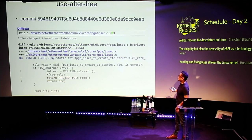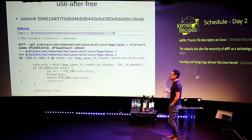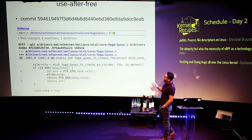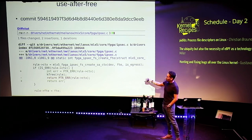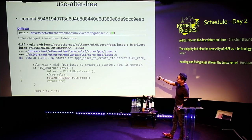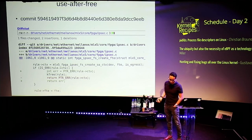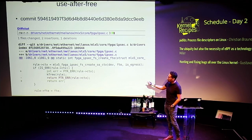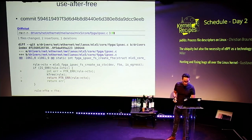Use-after-free is also pretty common, in particular when using macros like IS_ERR and PTR_ERR. Originally the code is freeing the root pointer and then accessing it — that's not good. The solution is simple: we have to declare a new variable, store this value prior to freeing the pointer, and that's it. But these types of issues are very common in the kernel.